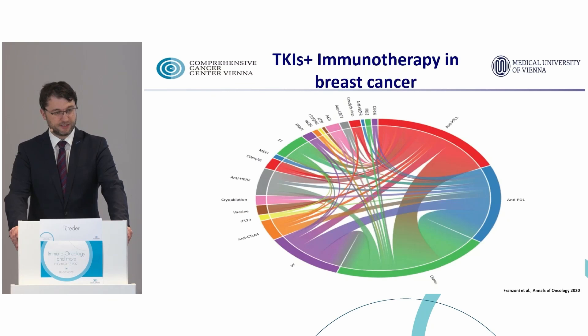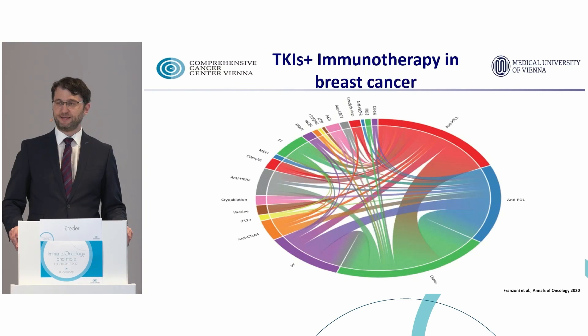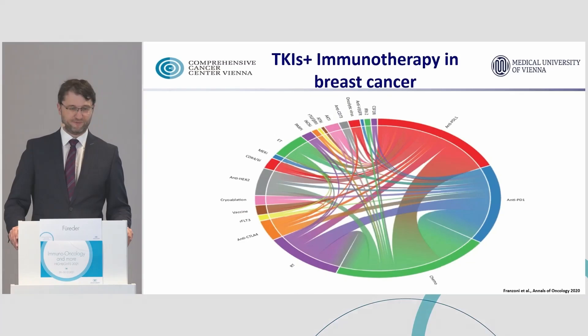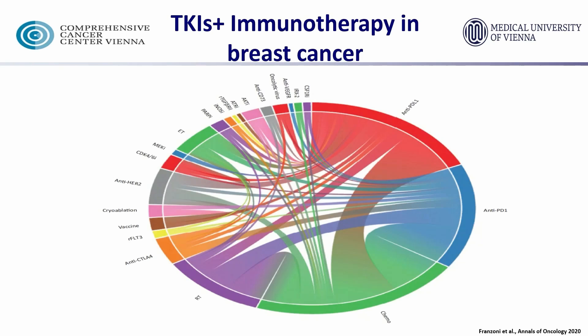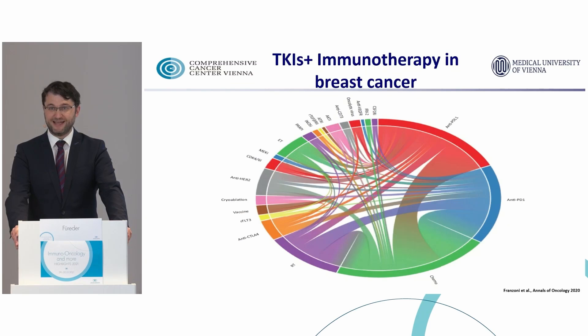Transferring this concept into earlier breast cancer stages should be even more promising. You can see here that anti-PD-L1/PD-1 checkpoint blockade is being combined with almost everything, including tyrosine kinase inhibitors — as well as PARP inhibitors — and this concept is being investigated in early breast cancer in phase 1 to 3 studies.